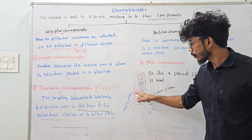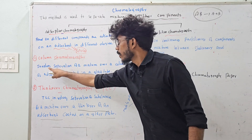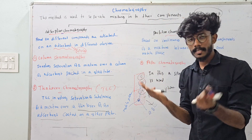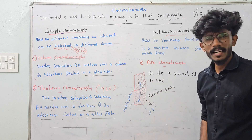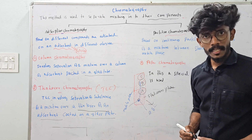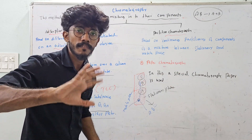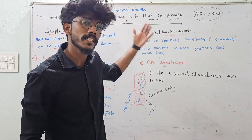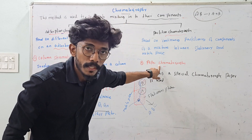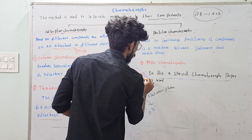If you use a thin layer packed in a glass tube instead of a plate, that is column chromatography. This technique involves separation of a mixture over a column of adsorbent packed in a glass tube. The basic idea is the same as TLC — this technique is called column chromatography. Partition chromatography is based on continuous partitioning of components of a mixture between two phases. Paper chromatography is used in partition chromatography.